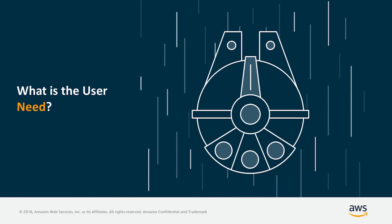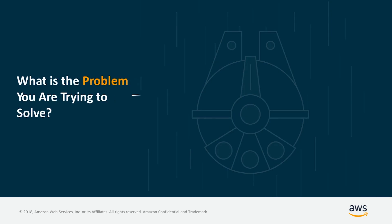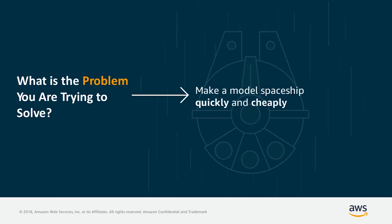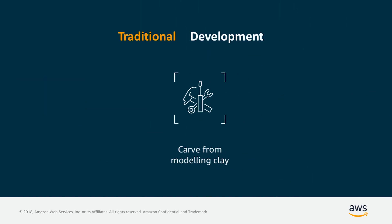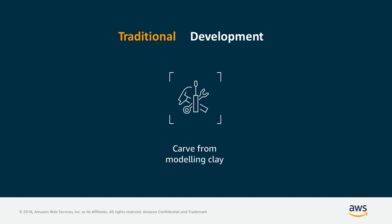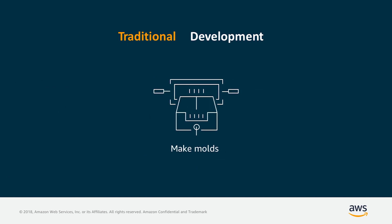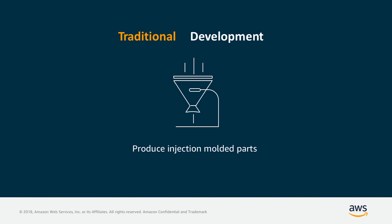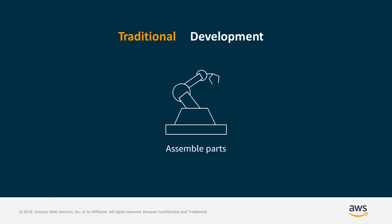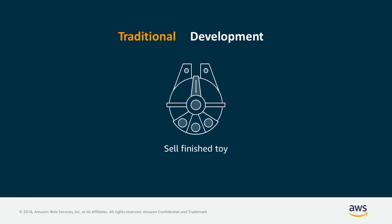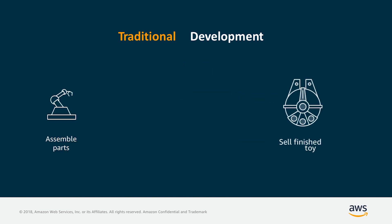Let's assume that we're trying to build something like a toy spaceship. The problem we're trying to solve is to get a model spaceship built quickly and cheaply so our kids can go play with it. Now, with traditional development, you'd design a prototype, figure out how to carve it from modeling clay, then make molds, produce injection molded parts, assemble those parts with some kind of robot, and finally you'd have a finished, nice-looking toy — just what you wanted. But that takes a long time.